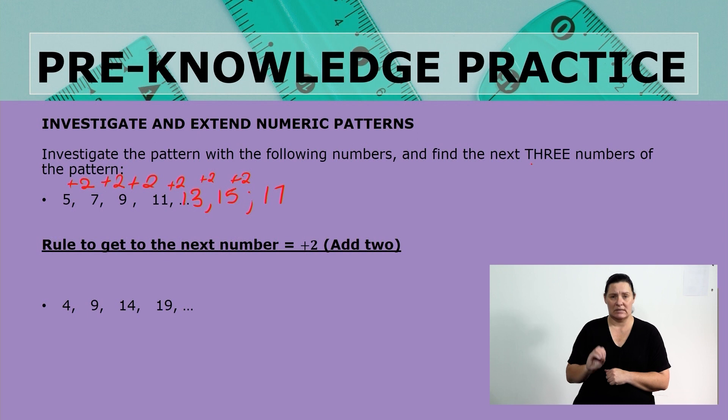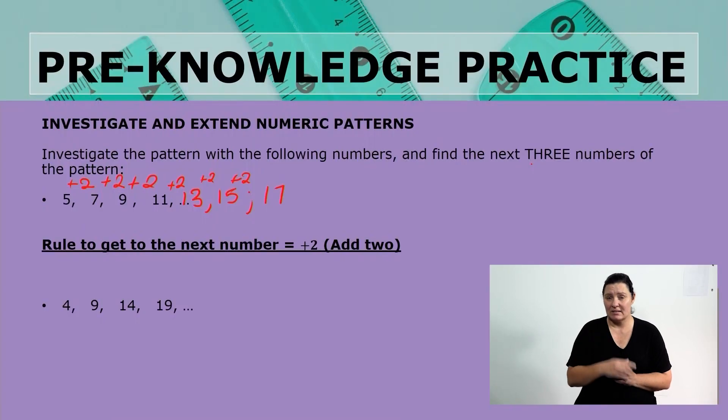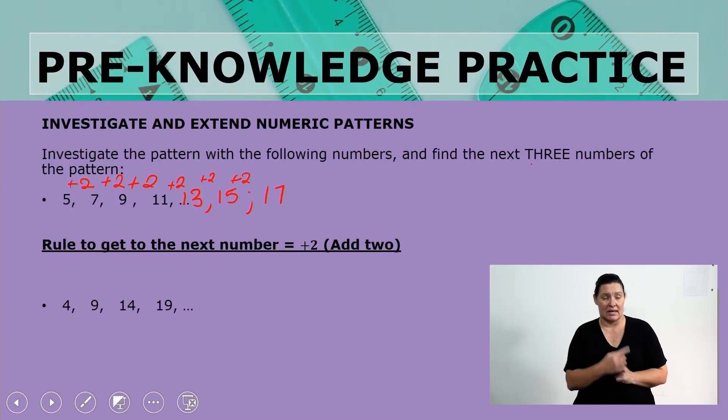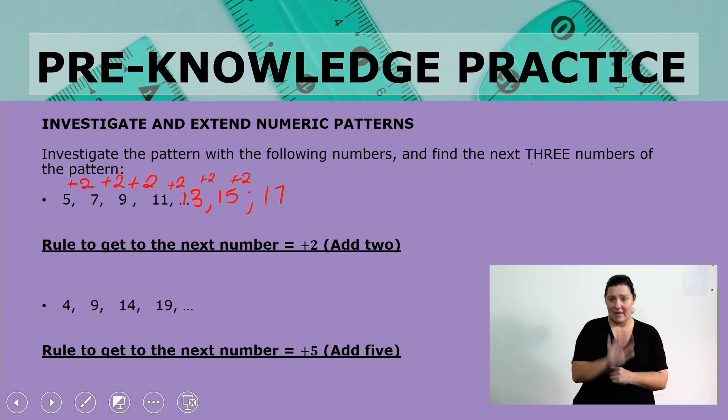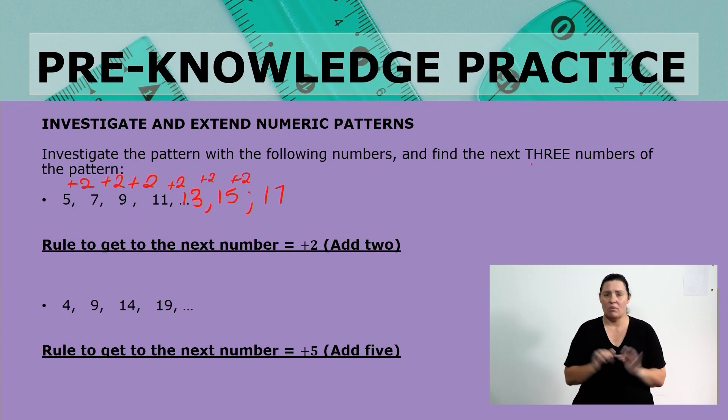Let's look at another example. We have 4, 9, 14, and 19. What do you think is the pattern here? How are we moving from the first number to the next number? If you said that we are adding 5, you are absolutely correct and well done. From the first number to the next number we are adding 5 — we are counting in 5s, starting at 4.